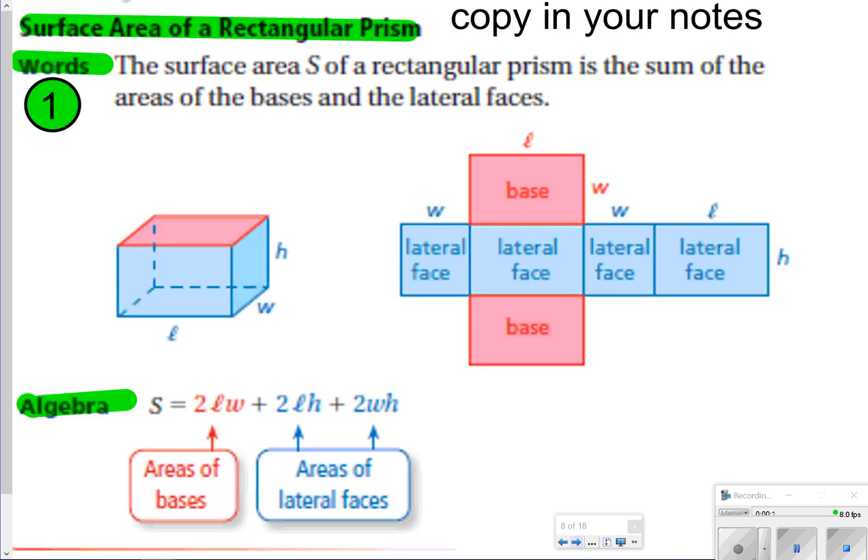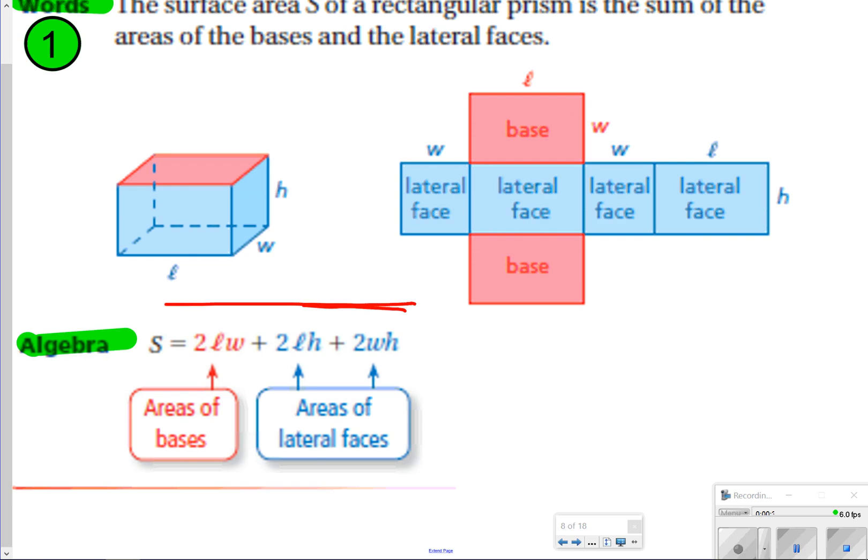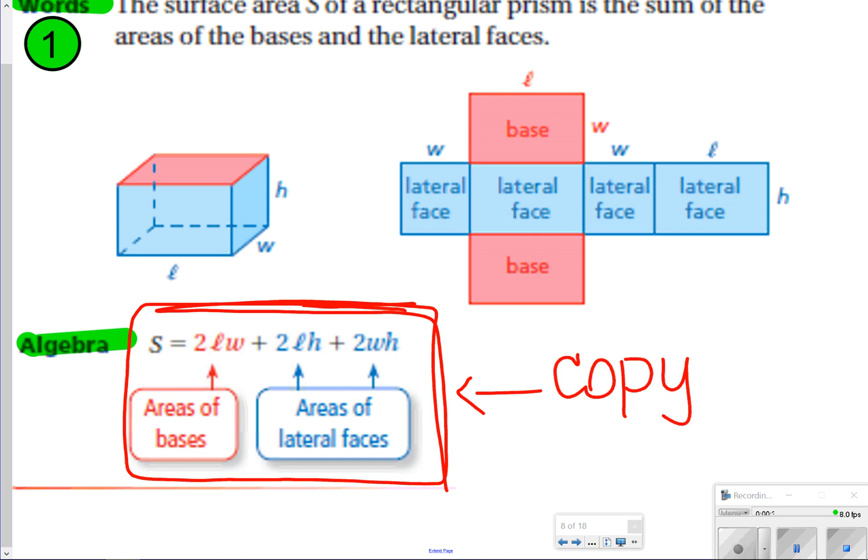The first thing we want to make sure is how to find the surface area of a rectangular prism. Basically what you're going to be doing here is just finding all the areas of the faces and adding them all together. An easy way to find the surface area of a rectangular prism is this formula right here: 2LW plus 2LH plus 2WH. This is what you're going to copy in your notes. This is the main thing that is important. So for rectangular prisms, make sure you copy down this formula. Let's go ahead and pause the video now and once you're done, click play to go on.